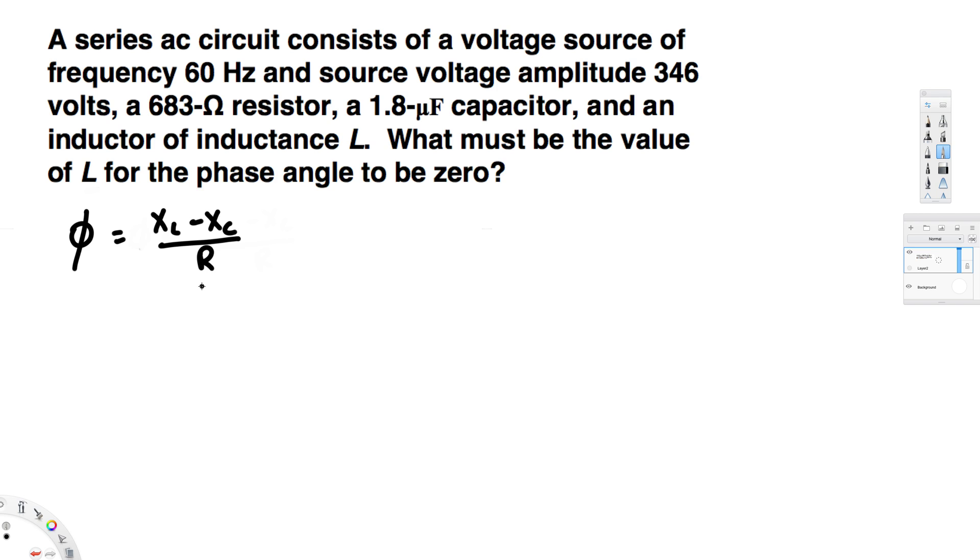Now, we want to have the phase angle to be zero, and the question is asking what must be our inductance value. To have the phase angle to be zero, we have to have R be infinity or the top should be zero. Those are the only possible ways. But here we have the resistor—this is not infinity, so this is not possible.